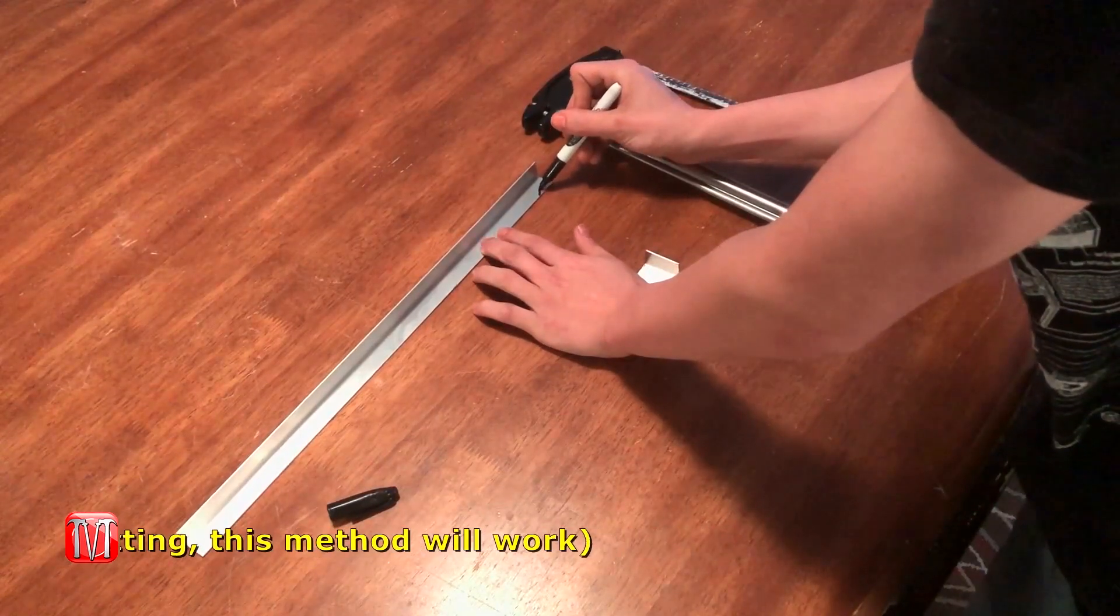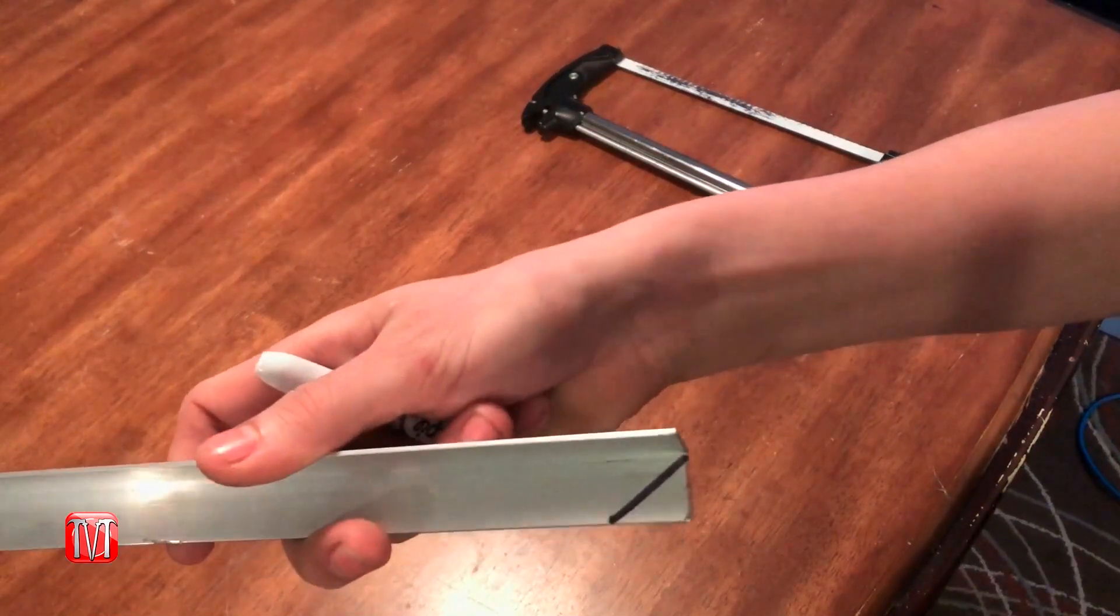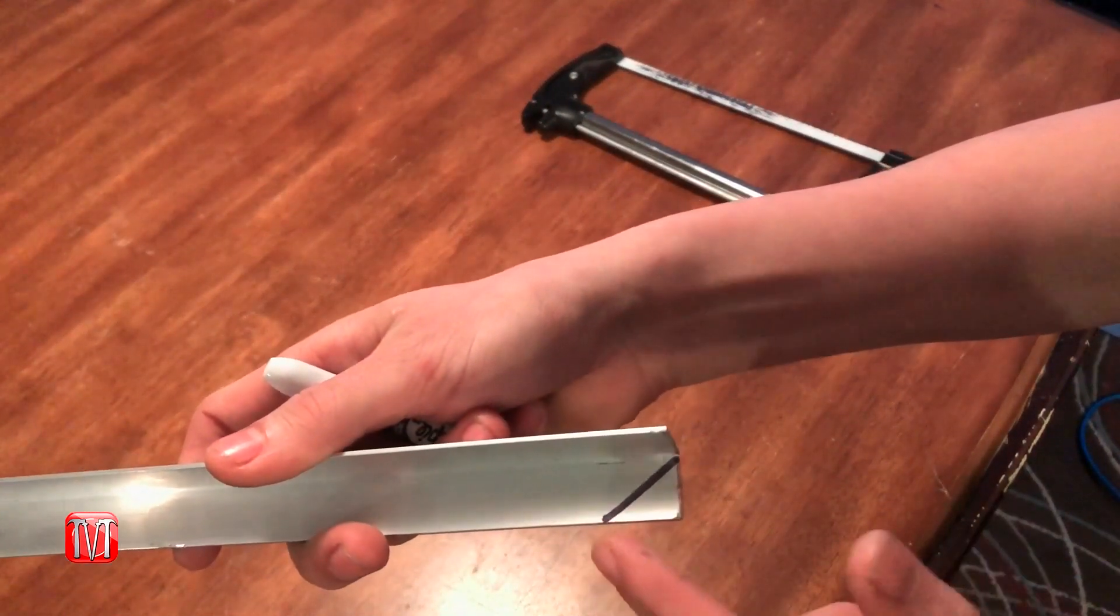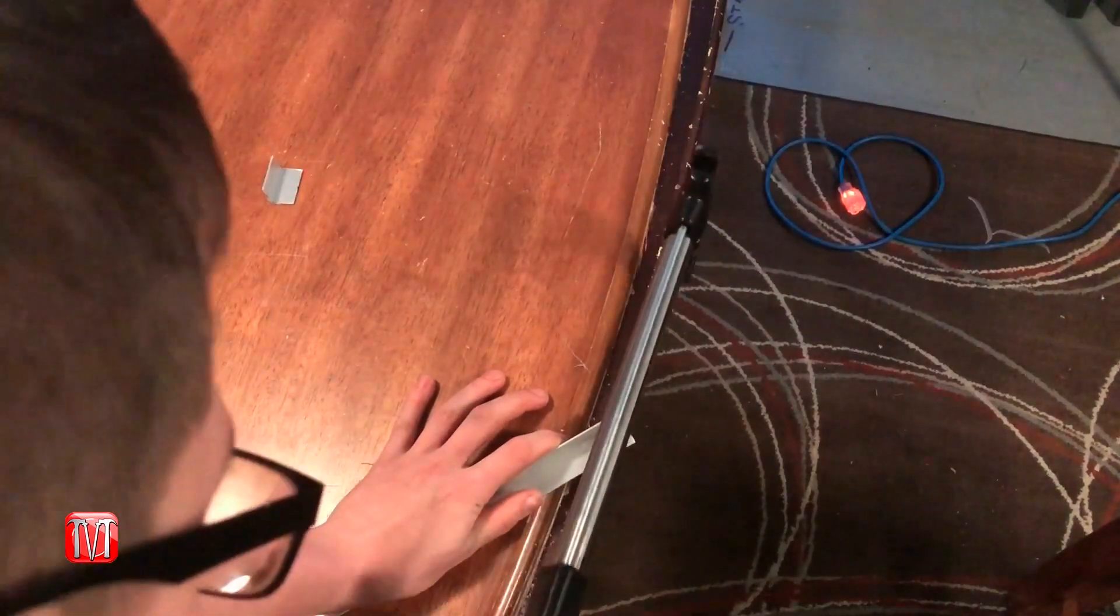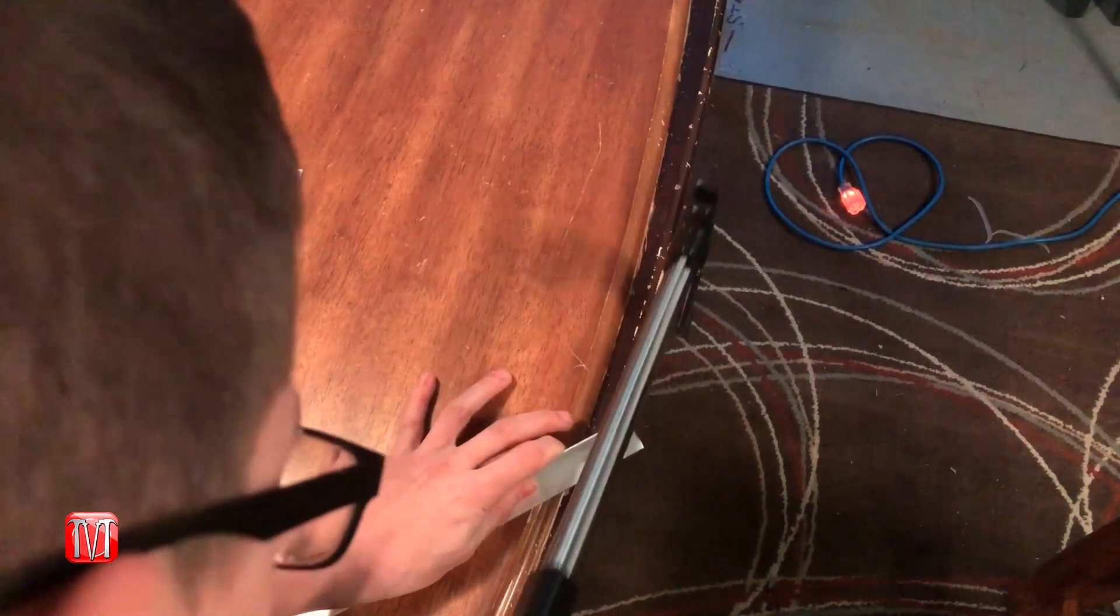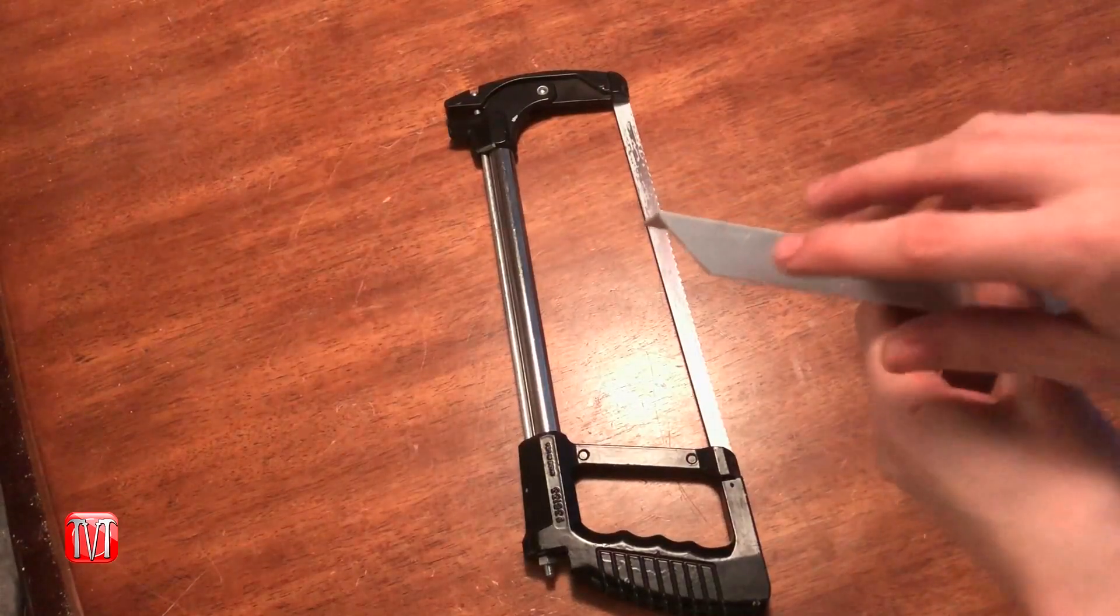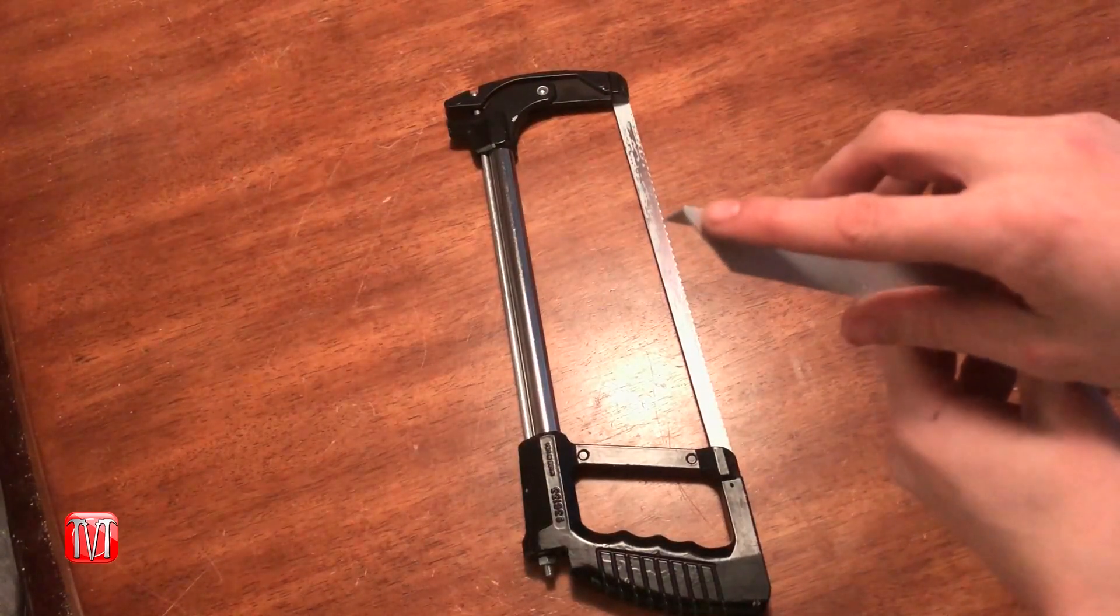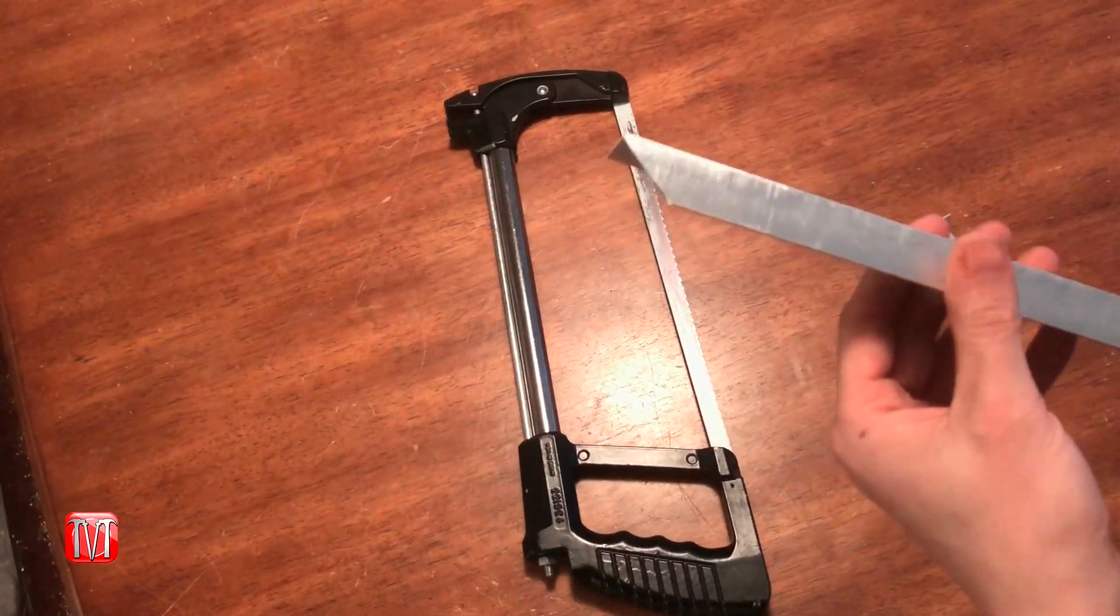By doing that, you are going to have a 45 degree angle, and you only need to cut this one side. Now make sure you know which side you're cutting, because depending on what side this piece rests on will also depend on which side you need to cut the 45 degree angle on.